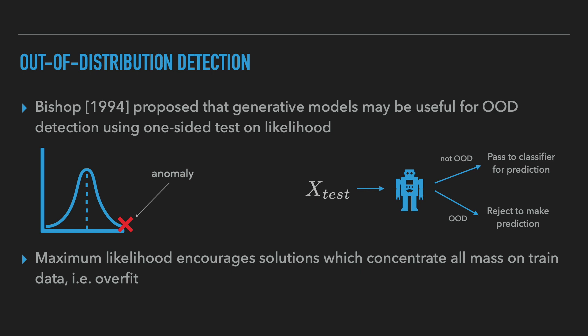In principle, maximum likelihood training of generative models encourages them to concentrate all the mass on the training data, which would achieve the global optimum of the objective. And intuitively, given the high but limited capacity of deep generative models, we could expect that when trained, these models would assign high likelihood to in-distribution data and low likelihood to anomalous data, thus allowing us to detect OOD inputs with likelihood.